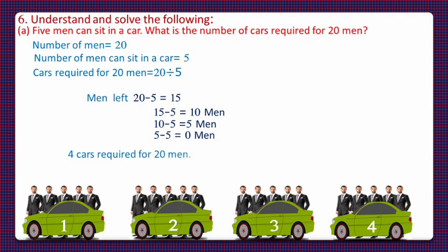Now, let us solve it by division by multiplication tables. So, number of men are 20 and 5 men can sit in a car. So, let us read the table of 5. 5 fours are 20. So, we will write 20 under the given dividend and on subtraction we will get 0. So, as the quotient is 4, so 4 cars are required for 20 men.